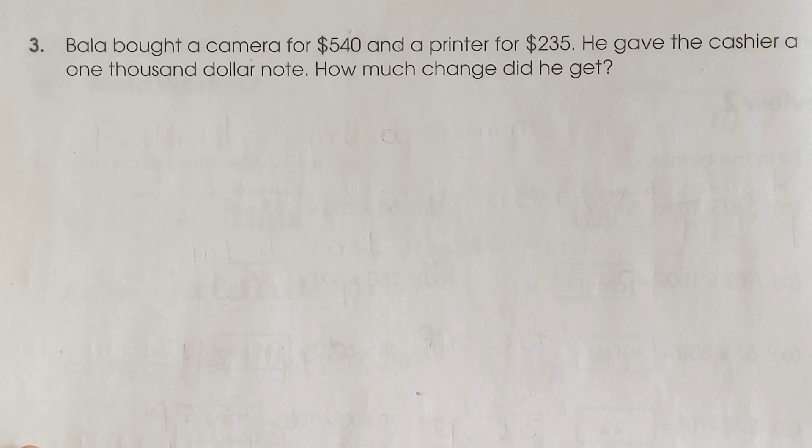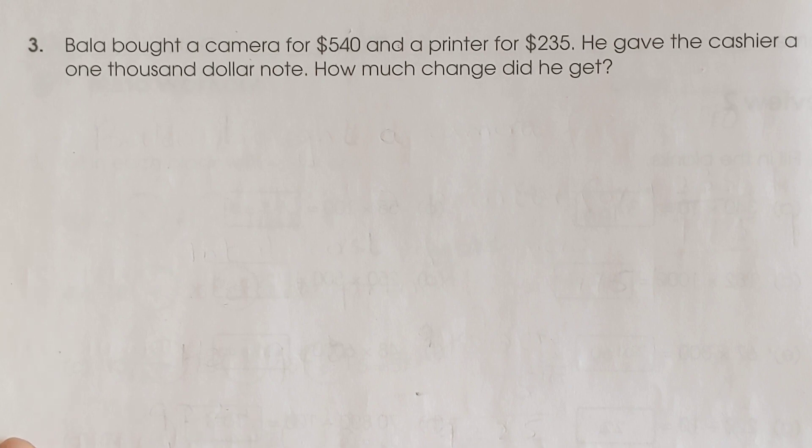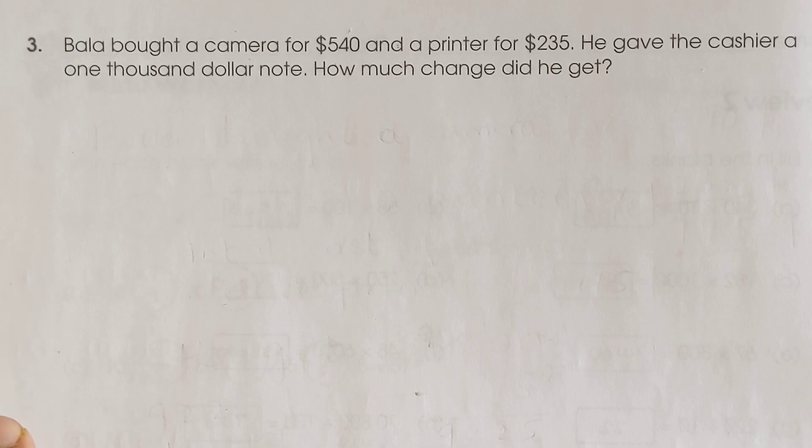Page number 42, question number 3 says: Bala bought a camera for $540 and a printer for $235. Two items were purchased and both prices are given. He gave the cashier a 1000 dollar note. This is common - we buy some items and give a large note in exchange, like when we buy things under hundred and give a hundred note, or buy things under thousand and give a thousand note, because we don't always have change.